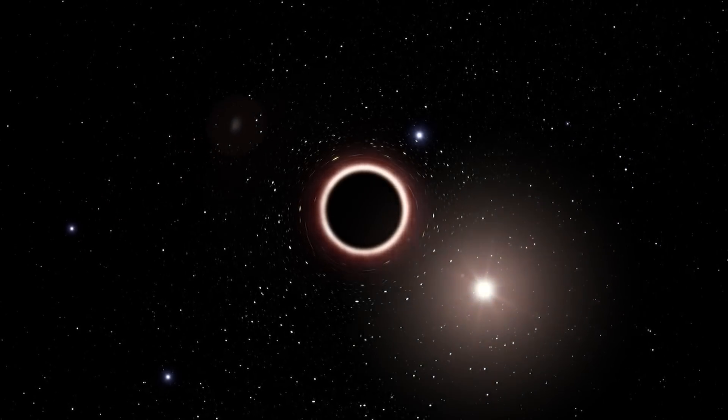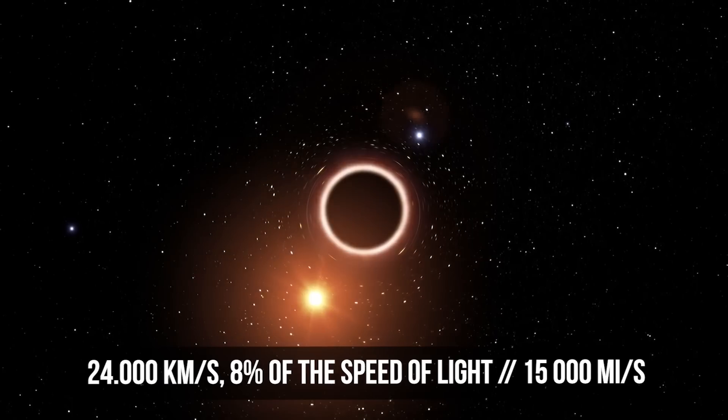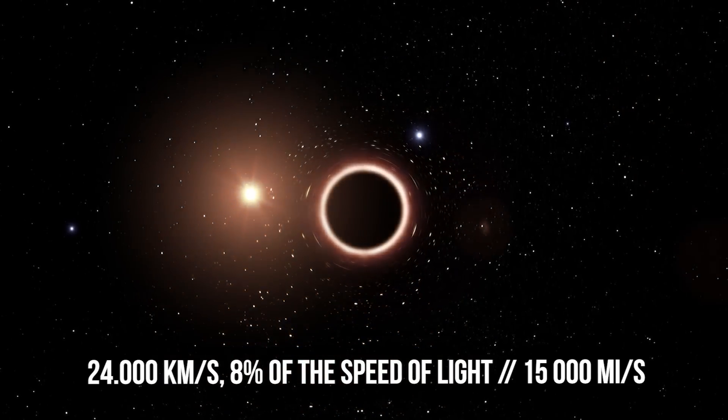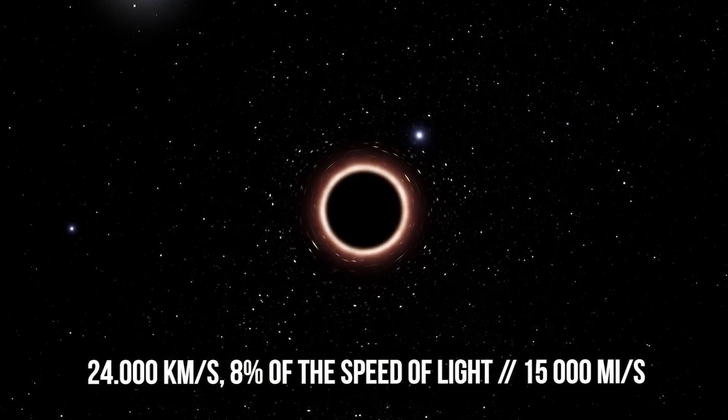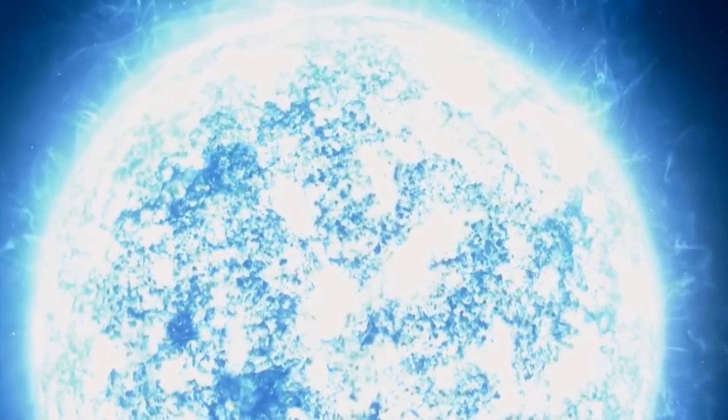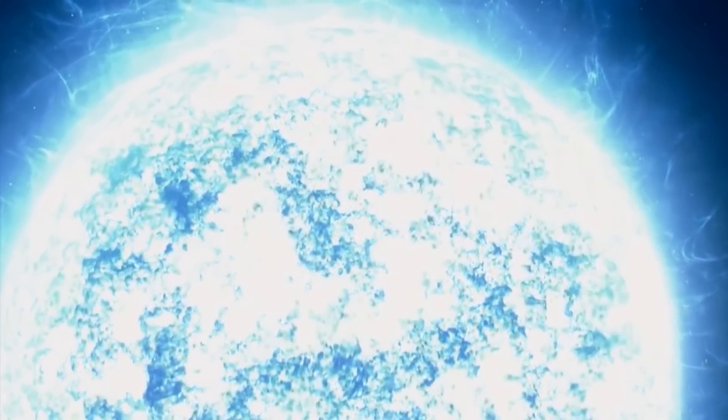Its speed reaches 24,000 kilometers per second, which is as much as 8% of the speed of light. But the title of the fastest star comes at a price. S4714 orbits Sagittarius A, a giant black hole in the center of the Milky Way.